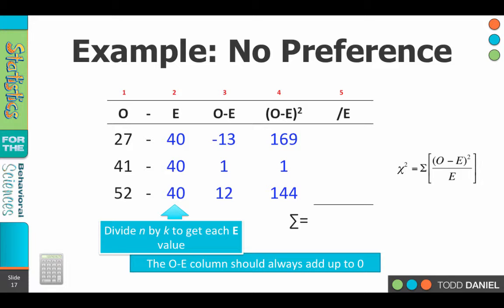Finally, we divide each number in column 4 by the value in column 2. Now in this case, the value in column 2 is the same. So we'll just divide each number in column 4 by 40.